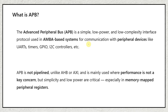APB stands for Advanced Peripheral Bus. It is a simple, low power, low complexity interface protocol used in AMBA-based systems for communication with peripheral devices like UART, timers, GPIOs, I2C controllers, etc. These are all peripherals. Whereas in the case of AHB, it is a high power, high bandwidth, high complexity interface. APB is a simple peripheral protocol — its main agenda is to communicate with peripherals.